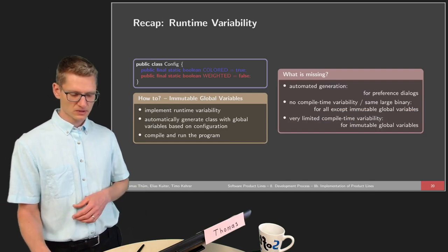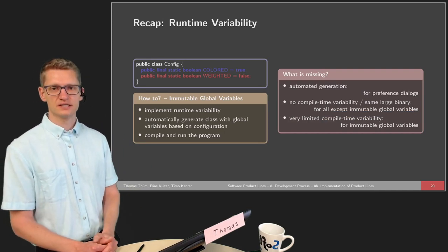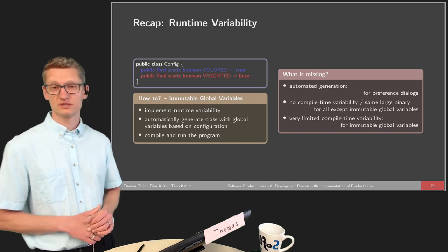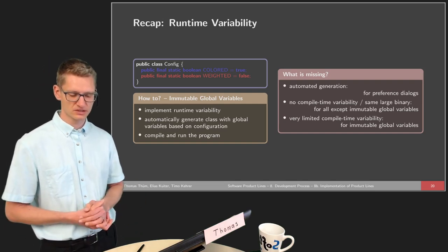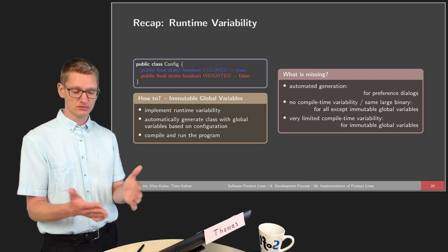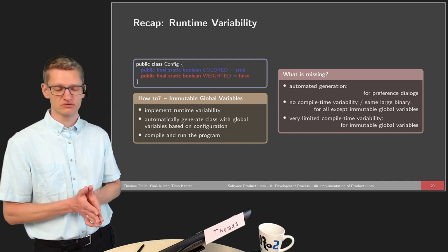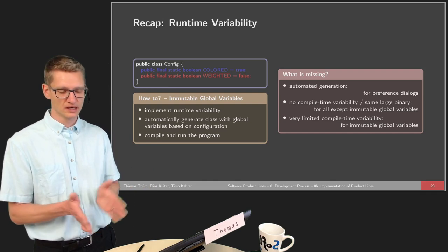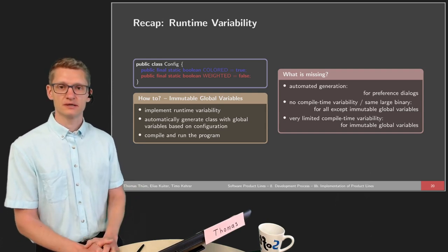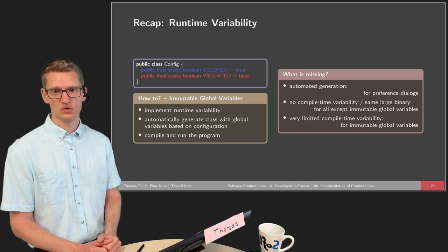There's another strategy to take into account. When we use global variables internally to realize runtime variability, we can also consider immutable global variables. In that case the situation is different because configuration happens already before compile time. Immutable global variables — which are fixed and cannot be changed at runtime or after compiling — can be taken into consideration by the compiler.